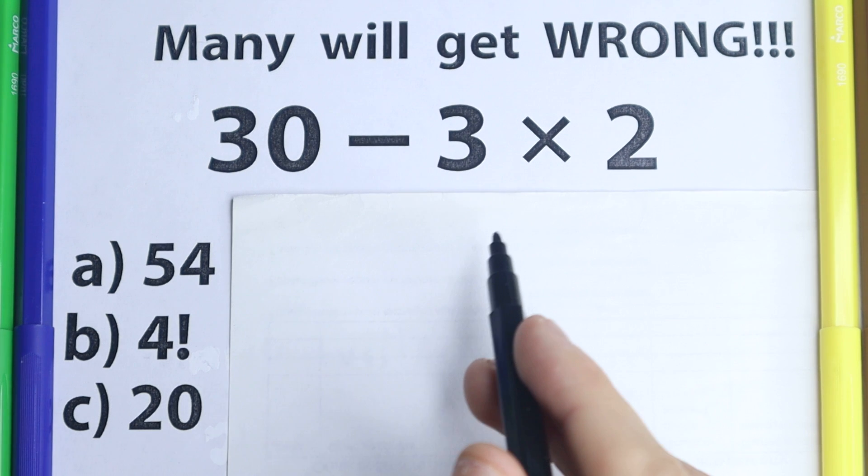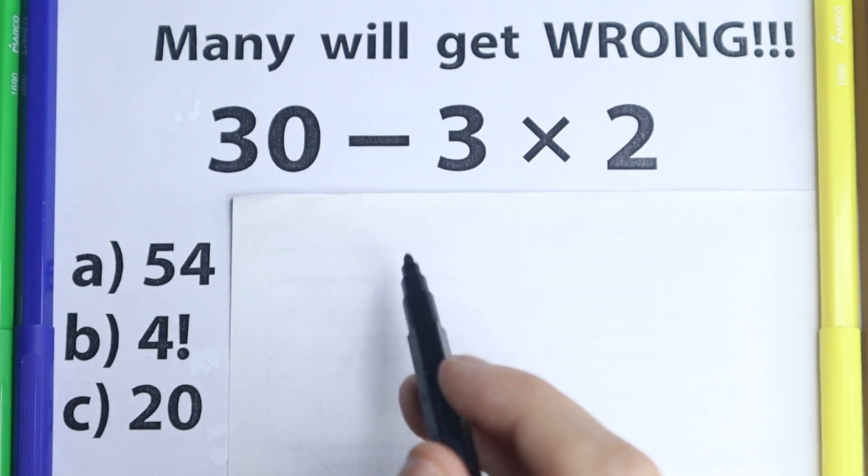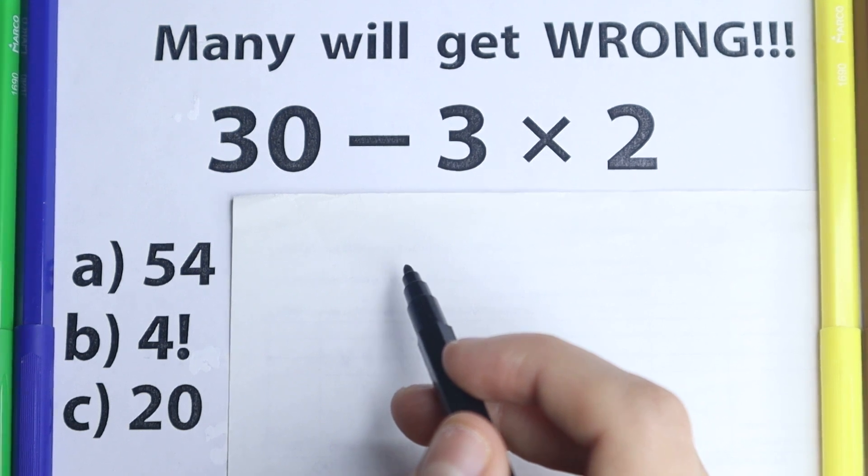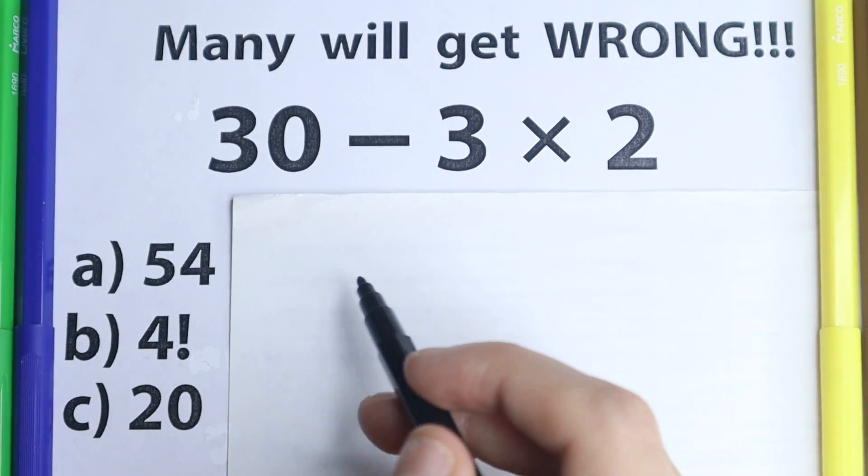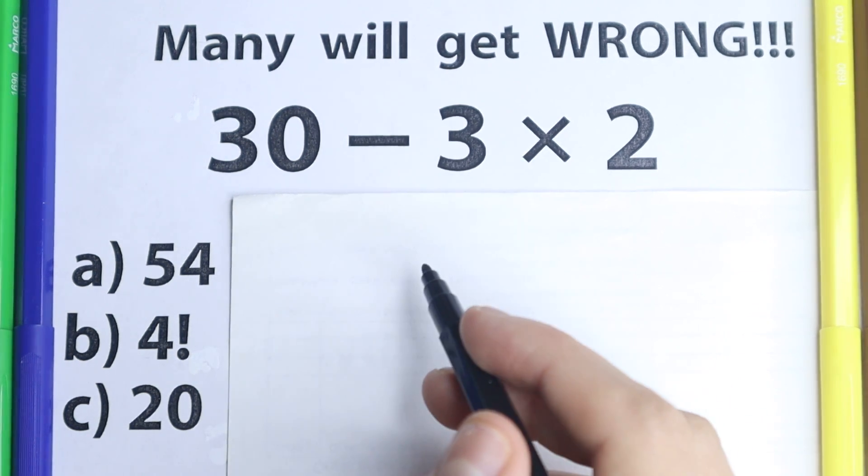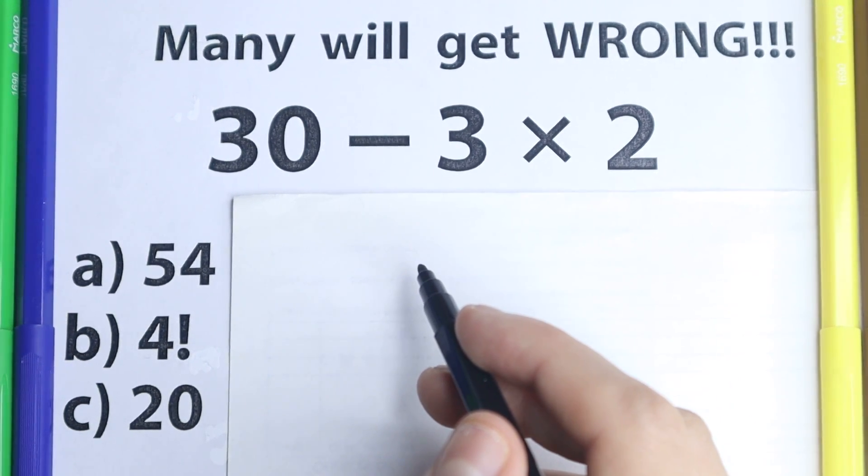And I don't want you to use your calculator right here, because here is a problem as you can see: 30 minus 3 times 2. So what is the correct answer? Of course most of you are like yes I can handle this problem, I can handle basic subtraction, basic multiplication, I learned this stuff in the third grade, that's fantastic.